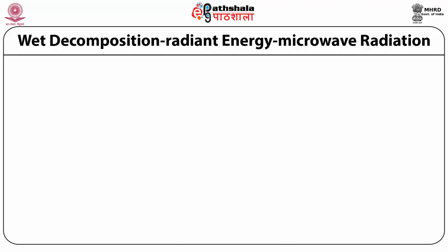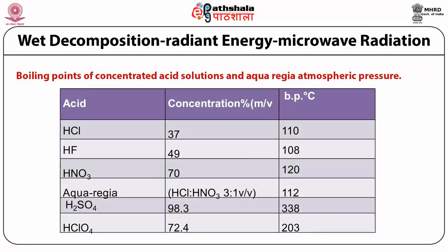This slide is for reference and shows the boiling points of various acids used for digestion, as boiling point is very important. It also shows the boiling point of aqua regia, which is a mixture of HCl and nitric acid in a 3:1 volume-by-volume ratio.